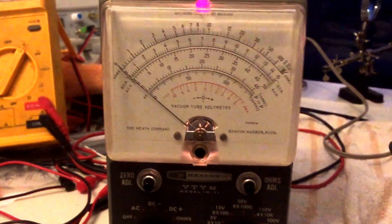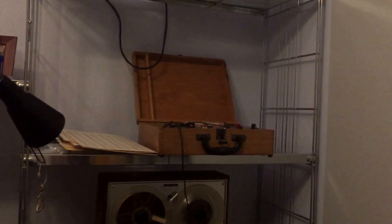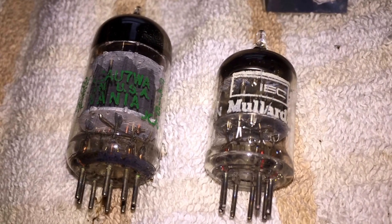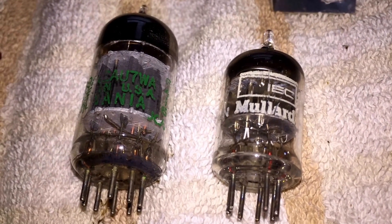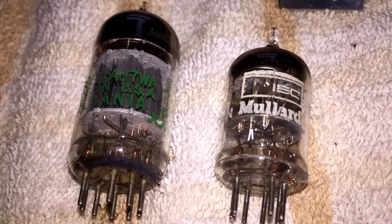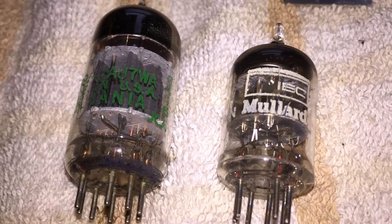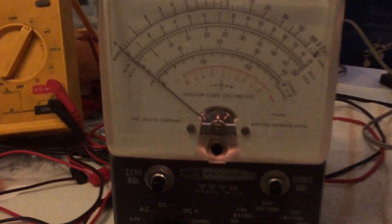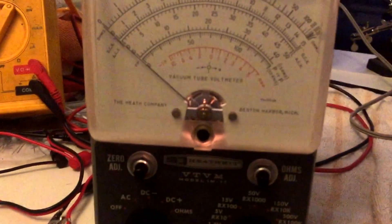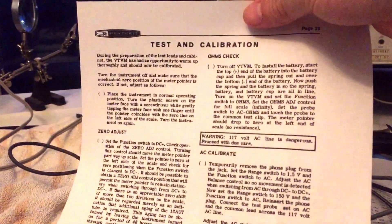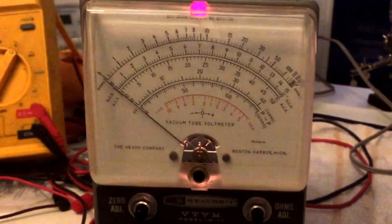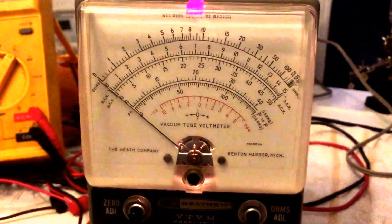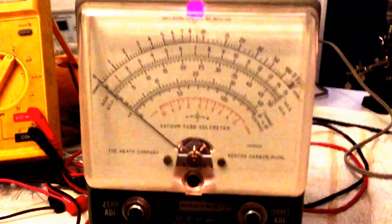I pulled out the tubes and ran them on the Sentry tube tester. They tested over 92, no shorts, no leaks, emission looked good. I got a copy of the Heathkit manual which included the original calibration procedure, so I went through and did the calibration as recommended. No burn-in period needed - the tubes have been sufficiently burned in.